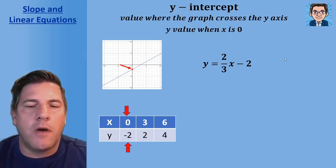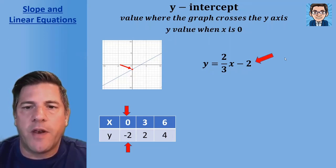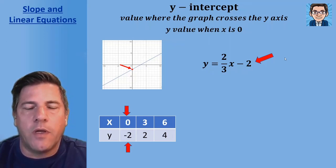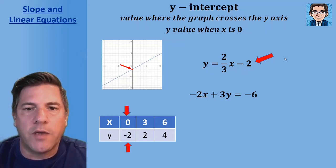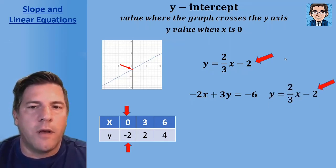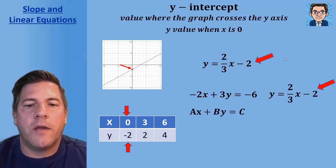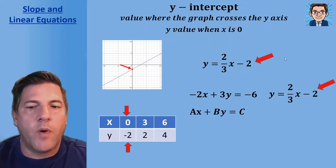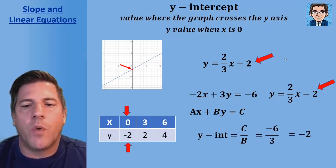For an equation, if it's solved for y — in slope-intercept form — we pick the number that's not being multiplied by x, and negative two is our y-intercept. If it's not solved for y, we can solve for y and pick off the y-intercept, which is the number by itself. Or in standard form ax plus by equals c, the y-intercept is c over b. In this case that's negative six over three, or negative two.